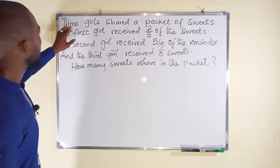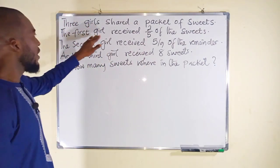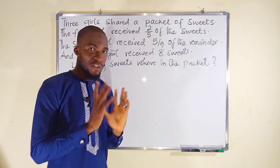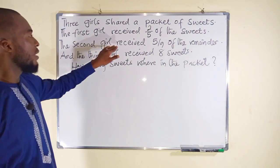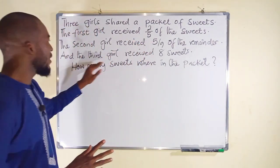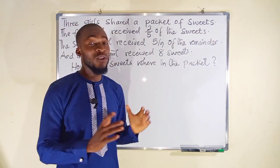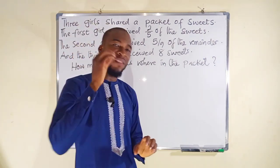The question said three girls shared a packet of sweets. The first girl received two over five of the sweets. The second girl received five over nine of the remainder, and the third girl received eight sweets. This question is asking us to find the total number of sweets in that packet.